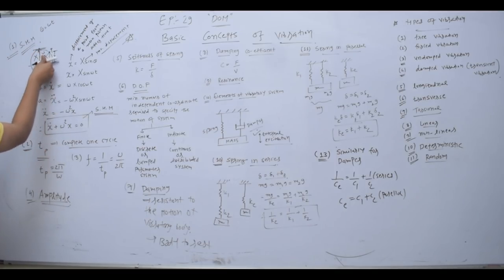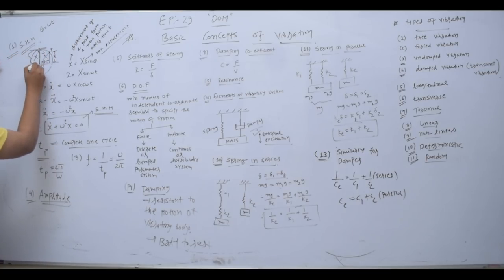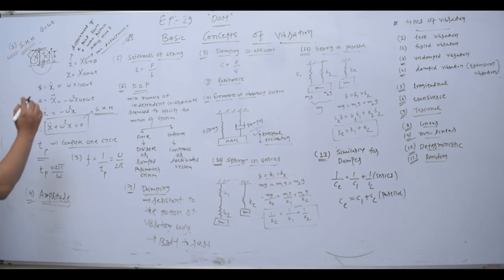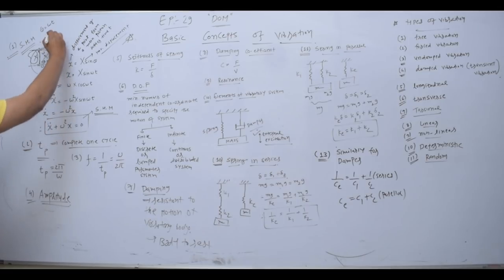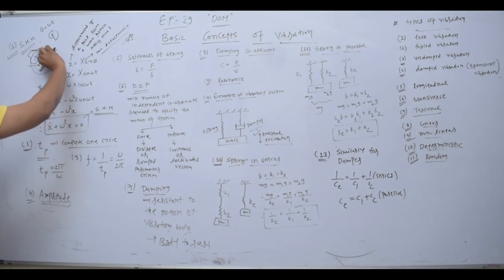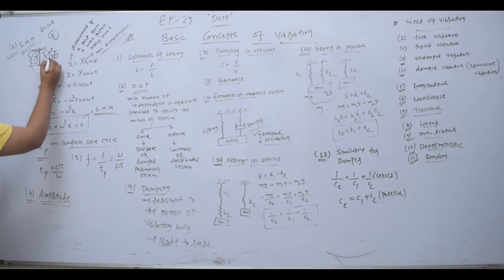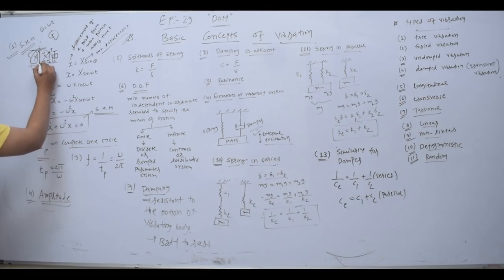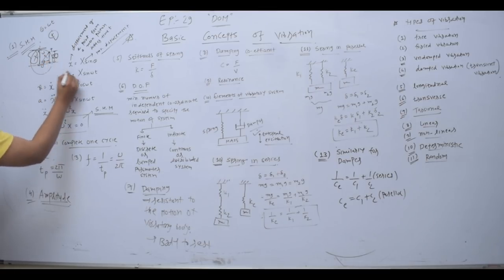If we start from the mean position, the particle will go up to the maximum displacement, which we call capital X. Now, we have to find the displacement x after a time T from the rest position. So we need to find this small x. Since capital X is the amplitude and theta is the angle, we can write: small x is equal to capital X sin theta.